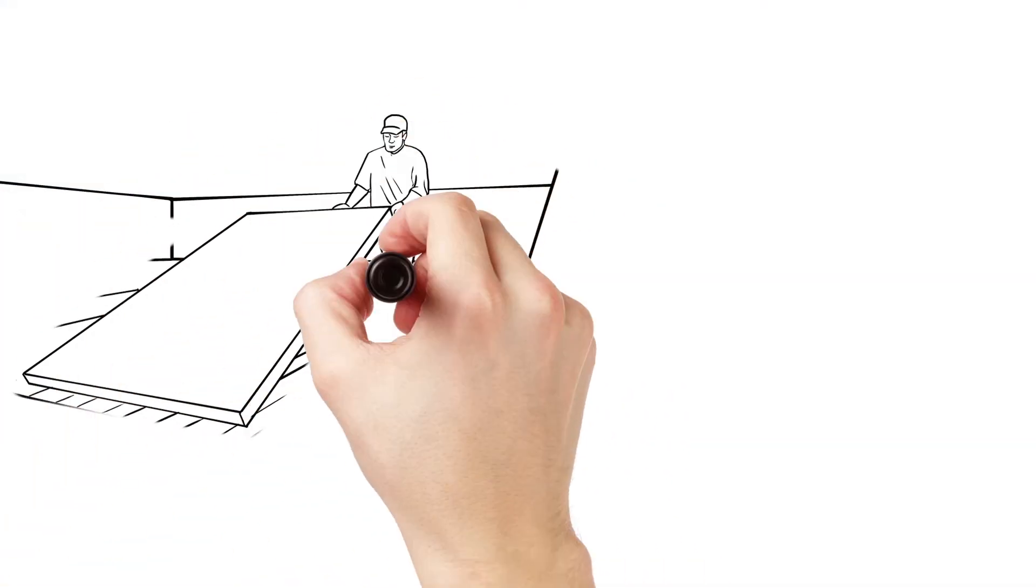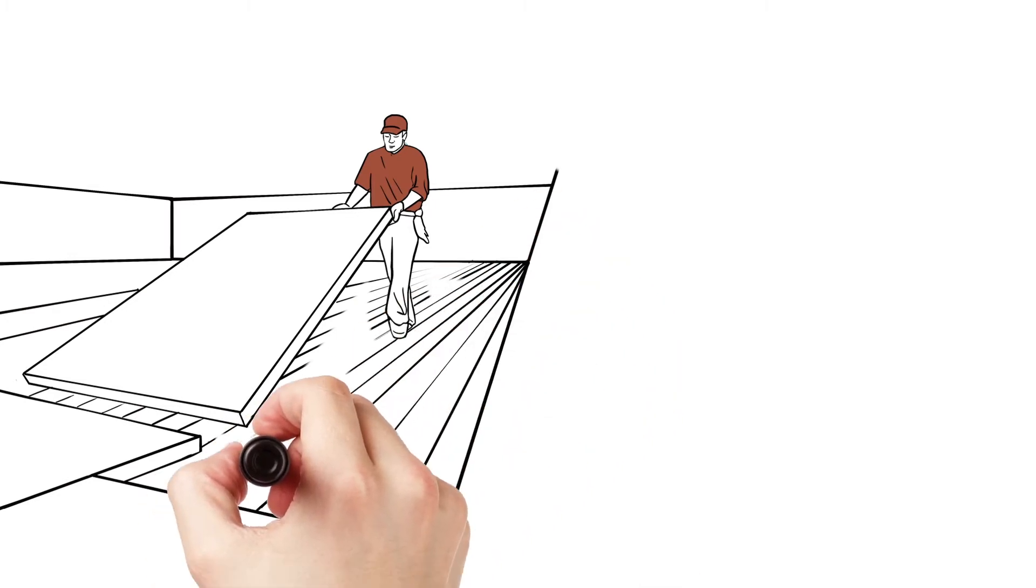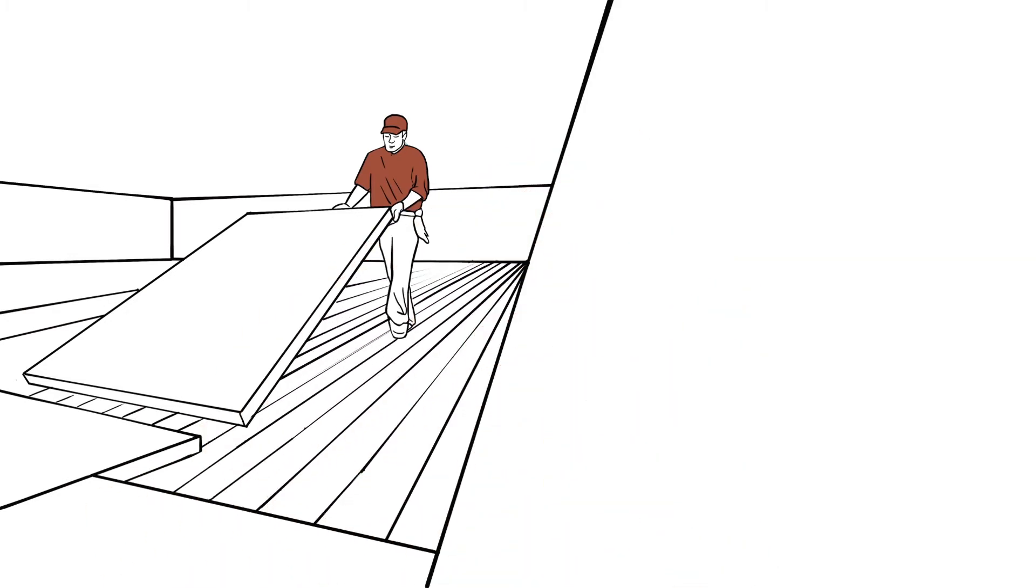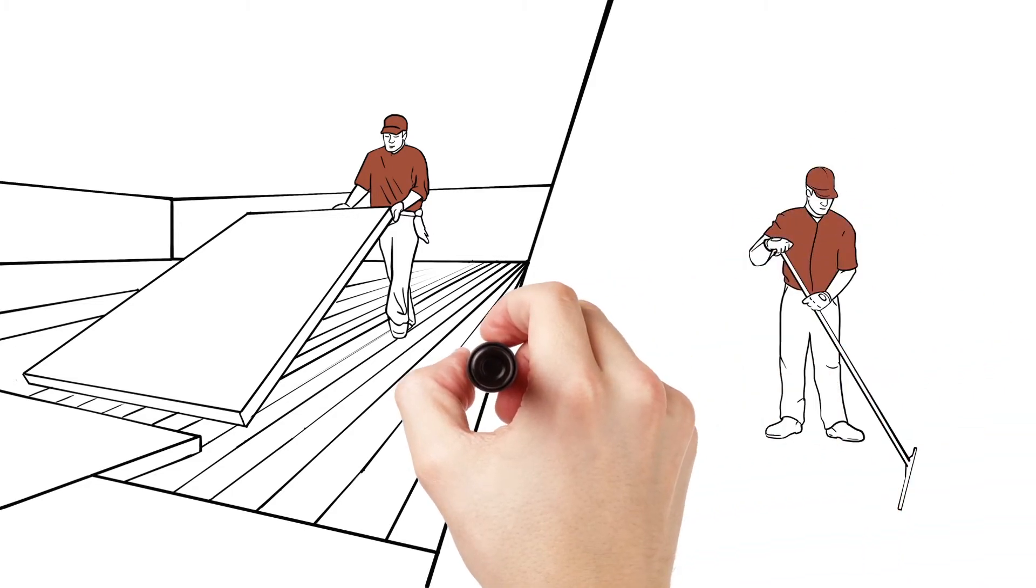In commercial buildings with a low-slope roof, adding insulation will enhance the energy efficiency of your building. Modified bitumen and built-up roofing systems may be used with virtually any insulation products.